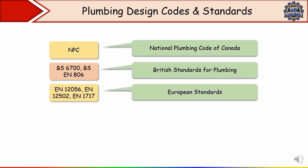Next we have European Standards — EN 12056, EN 12502 and EN 1717 — published by the European Committee for Standardization and used across Europe, providing regulations for water supply and drainage systems. EN 12056 covers gravity drainage system design, EN 12502 covers corrosion protection for plumbing pipes, and EN 1717 covers protection against backflow contamination. For example, in Germany, EN 1717 is followed to install backflow prevention devices in commercial kitchens to prevent contamination of drinking water.